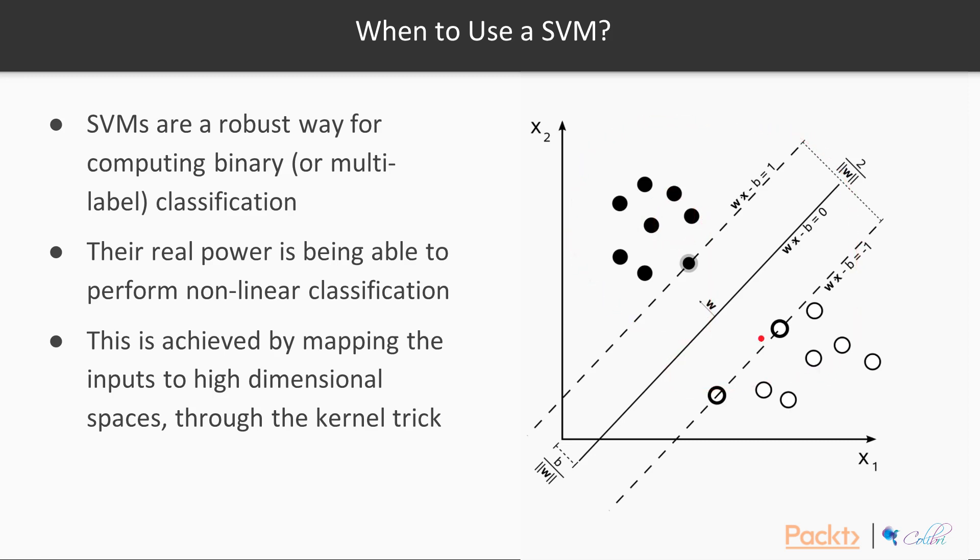What you can do is use something called the kernel trick, just like we did in PCA with principal component analysis, where you can effectively map the data points to higher dimensions and fit a linear boundary between the two.